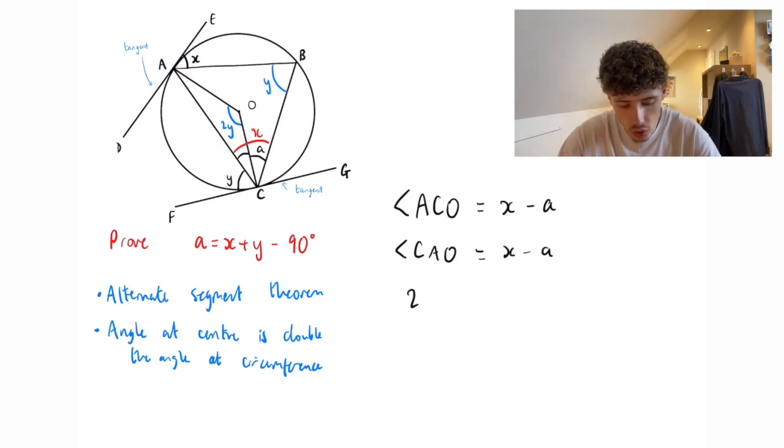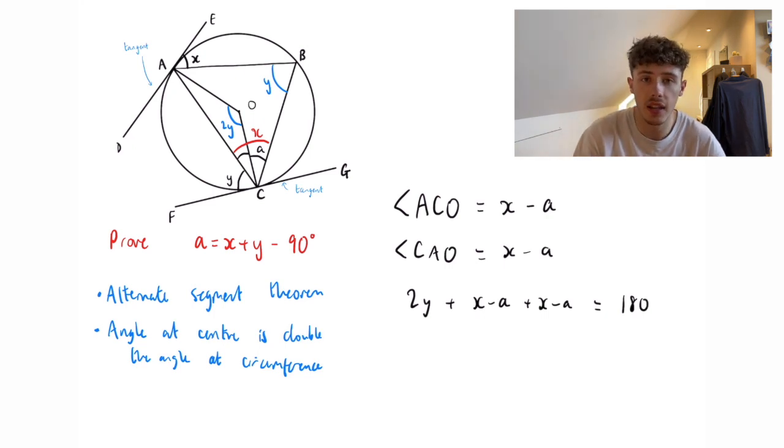So that means that 2y plus x minus a plus x minus a is equal to 180 because there are 180 degrees in a triangle. So just to make it clear,